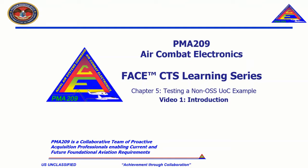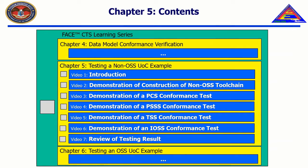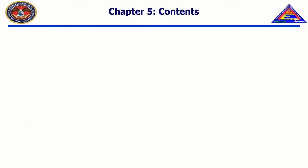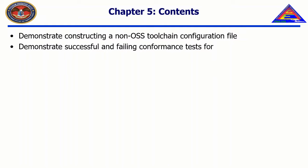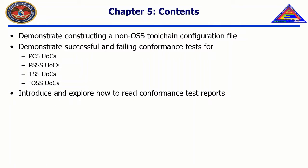Welcome to the CTS Learning Series, Chapter 5: Testing a Non-OSS UOC Example. In this chapter, we will demonstrate constructing a valid non-OSS toolchain configuration file, demonstrate successful and failing conformance tests for PCS UOCs, PSSS UOCs, TSS UOCs, and IOSS UOCs, and introduce conformance test reports that contain UOC conformance tests and explore how to read them.